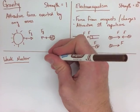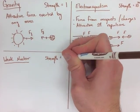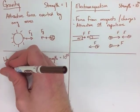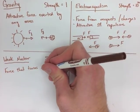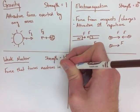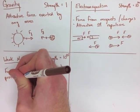The next force we're going to look at is weak nuclear. This has a strength of 10 to the 25. Now this is the force that is able to turn neutrons into protons during radioactive decay.